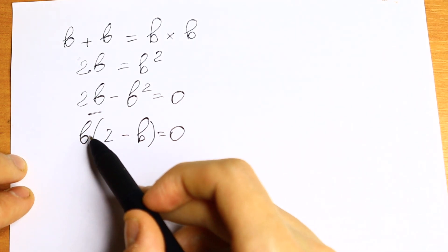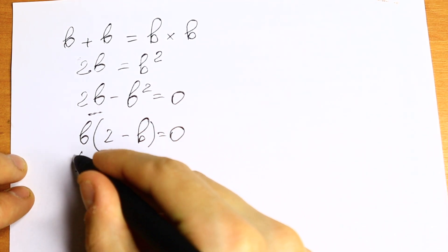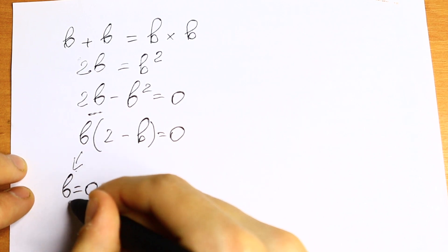As you can see, we have a product, so one element needs to be equal to zero. So b equals zero. This is our first root.